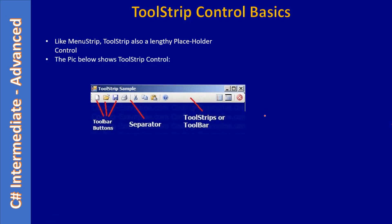The picture below shows an example ToolStrip control. If you see, this is the Windows Form and this is the toolbar or ToolStrip. The ToolStrip spans the entire width of the Windows Form. This part here is called a gripper — using this gripper you can move the ToolStrip. What you see here are toolbar buttons, showing only icons, and this one is the separator.